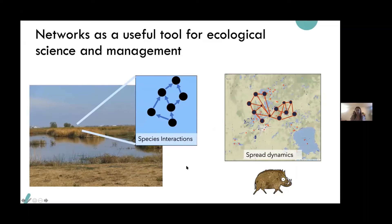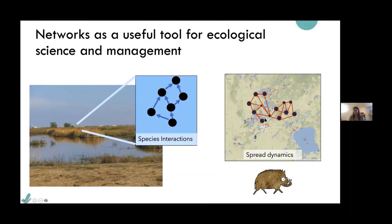For instance, if we want to model a food web in the salt marsh, we can have species as nodes and their interactions or feeding relationships as edges. Or turning to the case of invasive species, we can model a metapopulation and spread across a landscape using network approaches. This can help us identify nodes or areas that are really crucial or central to the spread of invasive species.